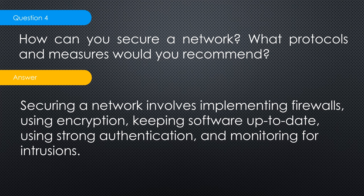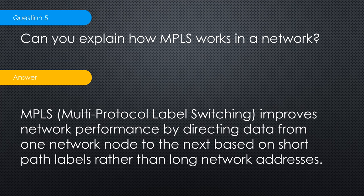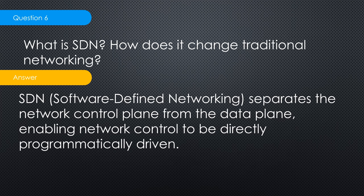Question five: can you explain how MPLS works in a network? Multi-Protocol Label Switching improves network performance by directing traffic from one network node to the next based on short path labels rather than long network addresses. Think of it like labels in Gmail — it saves time on processing network addresses.